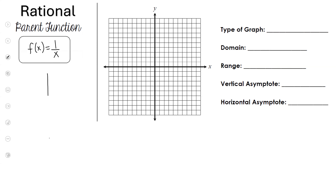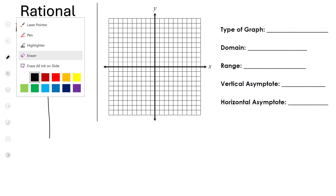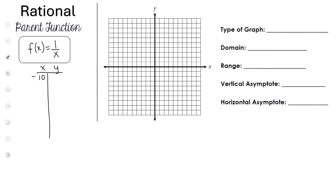I'm going to create a table on the side — you can copy it or just follow along. We're going to plug in points in order: negative 10, negative 1, negative 0.1, then 0, 1, and 10. Help me out with your calculator — please plug in 1 over negative 10 and tell me what you get.